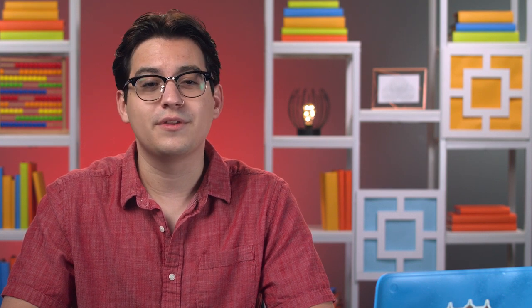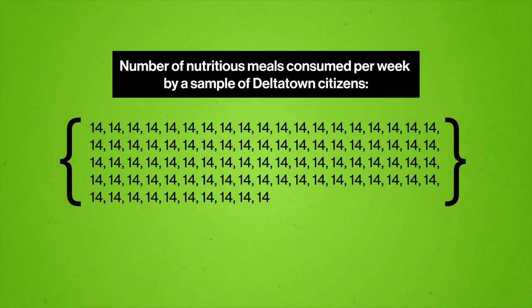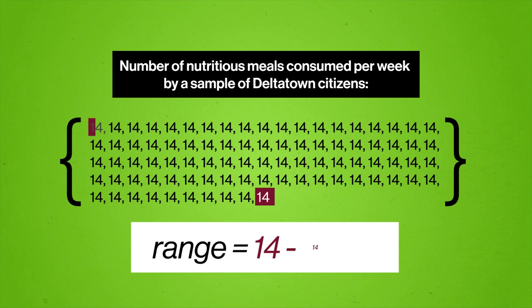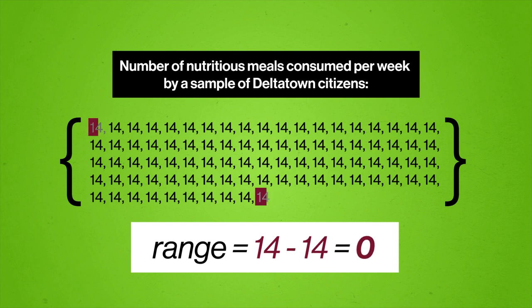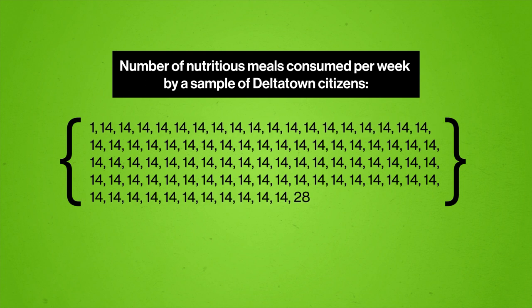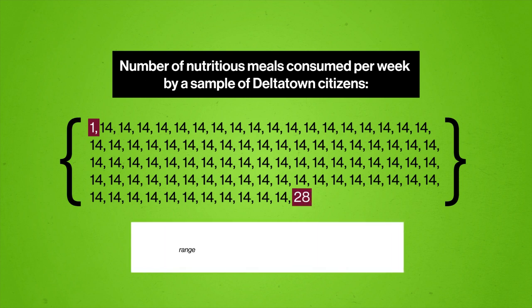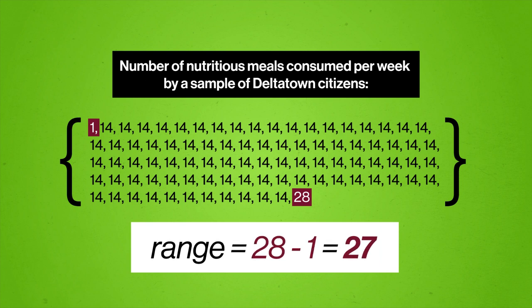Unfortunately, the range only tells us about the extreme ends of our data, which isn't great when we have outliers — data points so far outside the rest of the distribution that we strongly suspect something very different or peculiar is going on with them. For example, consider data from a totally different city, Deltatown, where everyone eats really similar meals. Initially the range might be zero, but if just two people moved there — one who never eats a nutritious meal and another who eats nutritious meals multiple times every day — even though almost everyone has the same number of meals, Deltatown ends up with the same range as Alphaville, which is 27. Because of cases like these, it's often more useful to have a measure of dispersion which takes into account all of the data's variation, instead of just the minimum and maximum.